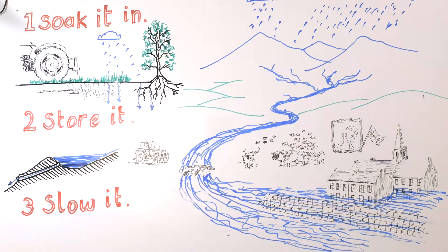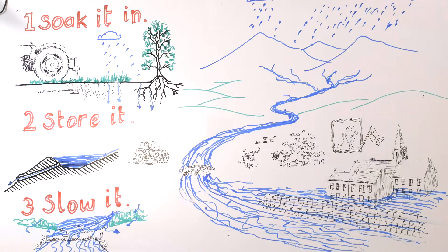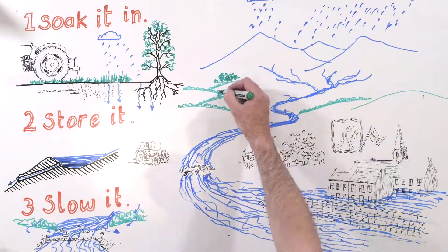We can also store water in ponds and in temporary features outside the channel. To slow the flow in the rivers, we can build leaky dams and create riverside woodland planting.